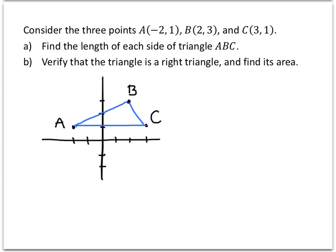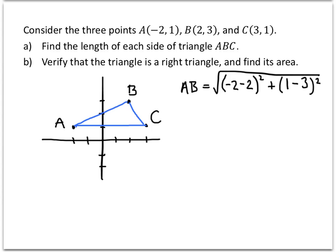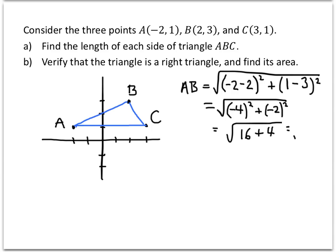To find the length of each side of the triangle, I'm going to use the distance formula. The distance from A to B is the square root of the difference in the x-coordinates squared plus the difference in the y-coordinates squared. So that's the square root of (-2 - 2) squared plus (1 - 3) squared, which gives us (-4) squared plus (-2) squared, which is 16 + 4, or the square root of 20. In general, you should leave your answer in exact form whenever possible.